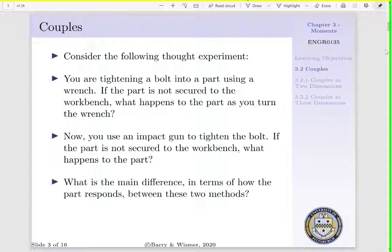Now, imagine using an impact gun to tighten this bolt. If the part is, once again, not secured to your workbench, what happens as you use the impact gun? In this situation, the bolt is going to tighten until there is sufficient resistance between the bolt and the threads, such that the part begins to spin. And the part is going to begin to spin along the center line of the impact gun. There's going to be no tendency to translate.